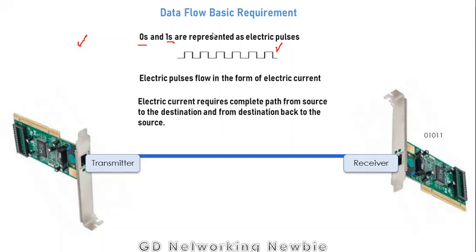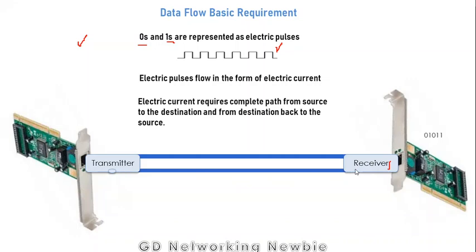Electric current has a requirement — it requires a complete path from source to destination and from destination back to the source. So if you want to transmit data from a transmitter to a receiver, electric current flows from the transmitter to the receiver and back, completing the path. This electric current carries our data, which is zeros and ones.